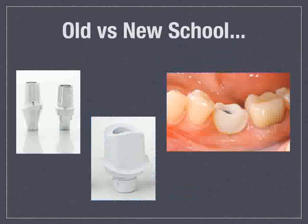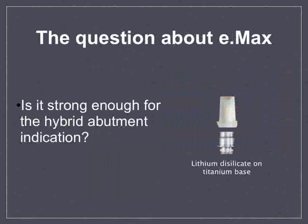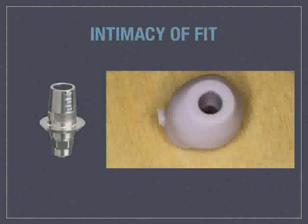What we're used to is on the left-hand side of the screen — titanium custom abutments and zirconia custom abutments. The question has been whether Emax, shown on the right, is strong enough to do the job. That's a quick image of how the systems fit together — an Emax piece on the right and a titanium fixture, and those pieces get looted together to become our custom abutment. First, Ivoclar and others made sure we have the ability to produce a product that fits intimately with the titanium fixture that Sirona makes.